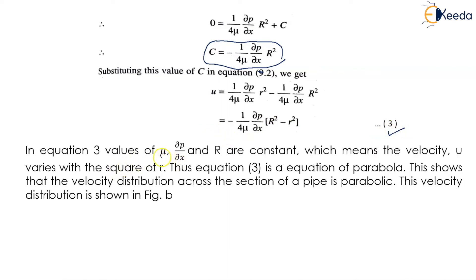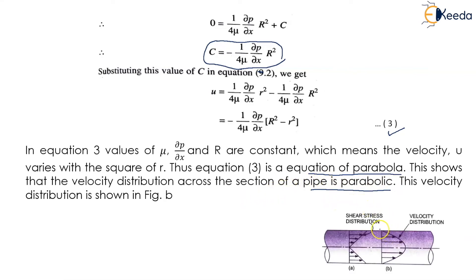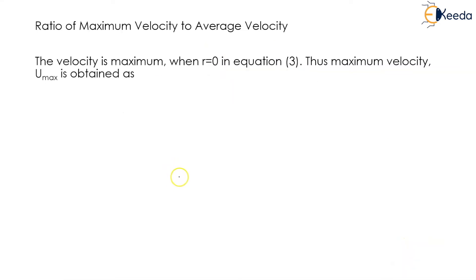In equation 3, mu, del p upon del x, and R are constant, which means the velocity u varies with the square of r. Thus equation 3 is the equation of a parabola, showing that the velocity distribution across the section of the pipe is parabolic in nature, as shown in figure B. The velocity is maximum when r equals 0 in equation 3. Thus maximum velocity u_max equals minus 1 upon 4 mu into del p upon del x into R square. This is equation number 4.